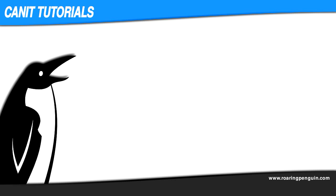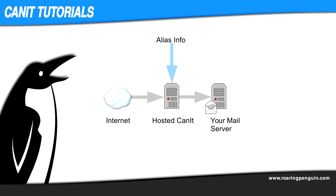So how do we reconcile a count of email addresses with a count of actual mailboxes? The answer is to give Hosted Canet more information than just the addresses — in other words, give Hosted Canet a way to discover aliases. The way to tell Canet that two different email addresses refer to the same mailbox is to make them share the same quarantine.